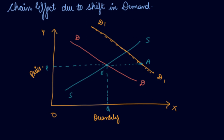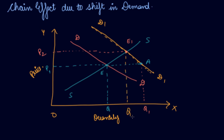When demand increases, it puts pressure on both the supplier and the price. As in the case of onions — if demand increases, the price will rise. Your new equilibrium gives a new price P2. Demand increases to Q1, but the new equilibrium quantity settles at Q2. Let's understand why through the chain effect.